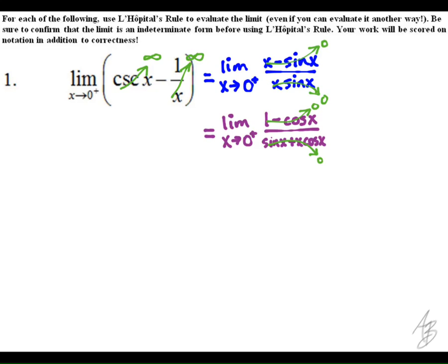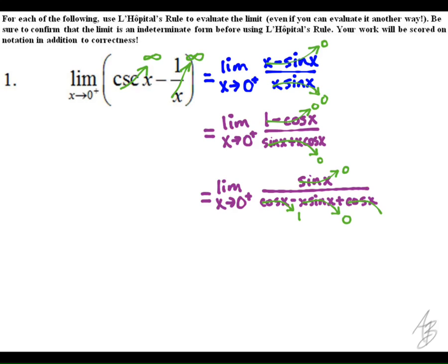We still have the indeterminate form zero over zero, so we use L'Hôpital's rule again. We end up with zero over two when we plug it in, so our answer is going to be zero. On this assessment, points were given for the final answer, for writing the limit as a quotient with a common denominator, and for getting to this step using L'Hôpital's rule twice.